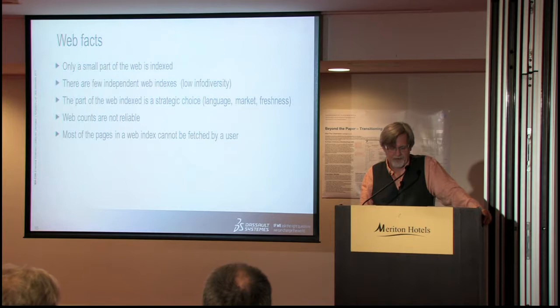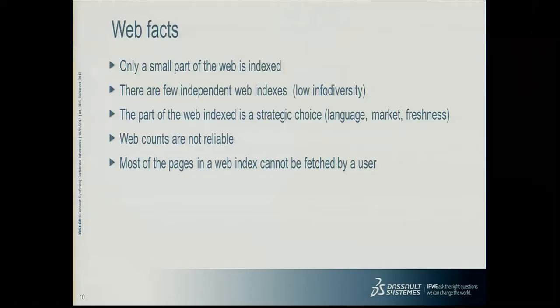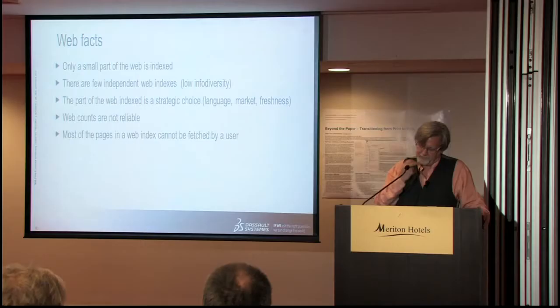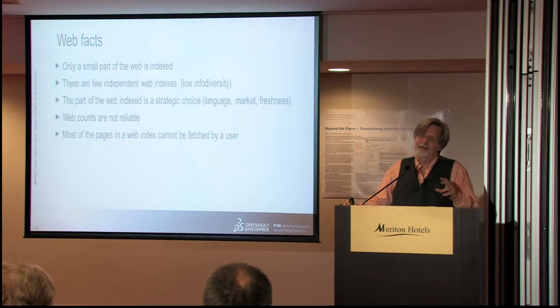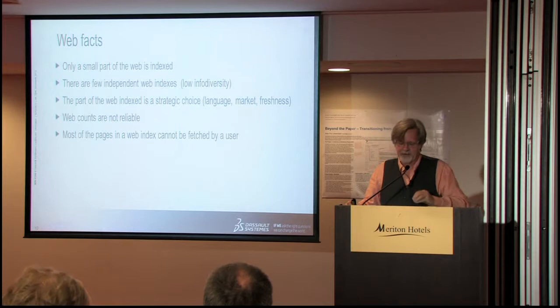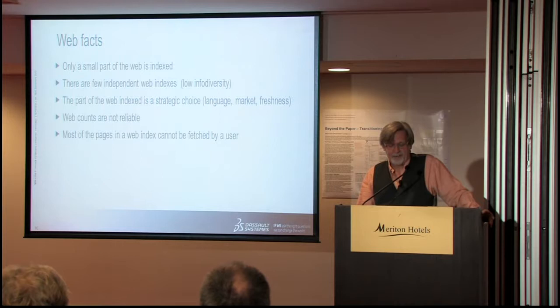To summarize these web facts: only a small part of the web is indexed; the web is bigger out there. There are fewer and fewer indexes available. What is indexed by Google, Yahoo, Bing, or Baidu is a strategic choice. Most people think something like Google is a public service — it's not. It's an advertising company which makes 97% of its income from advertising, and that income dictates what choices it provides as a service. Web counts are not reliable, especially when they're very small. And most pages in the web index can't be fetched by a user.